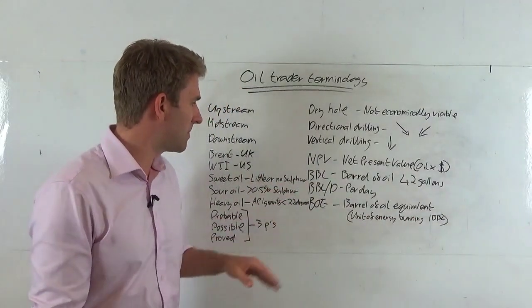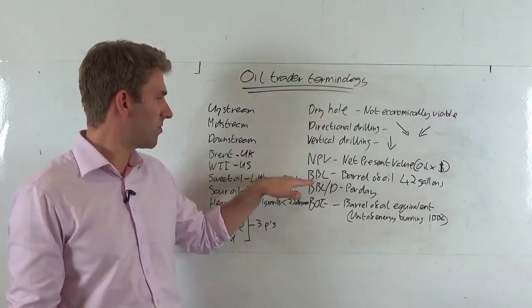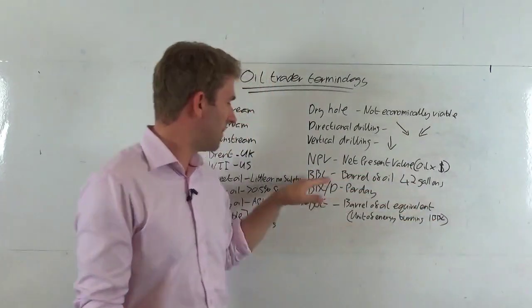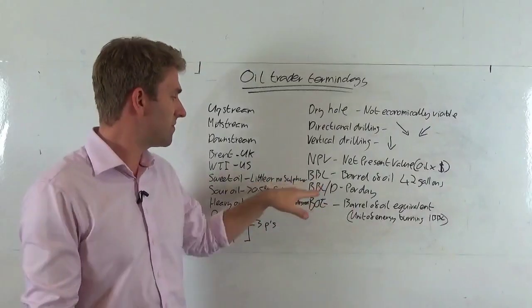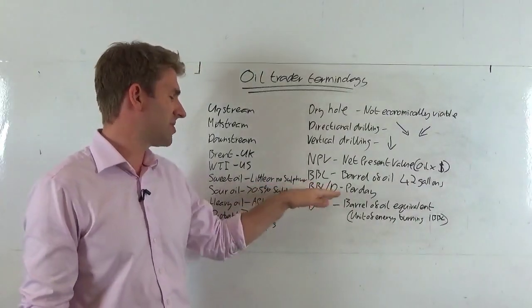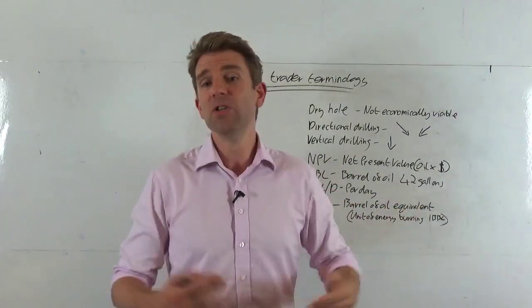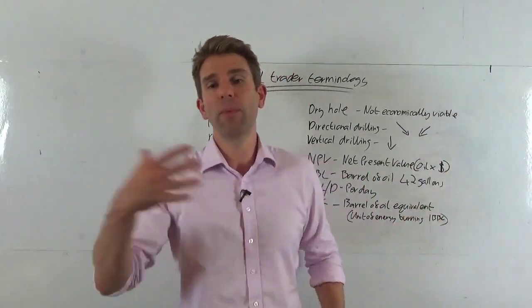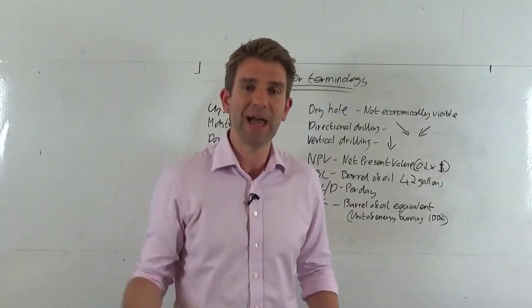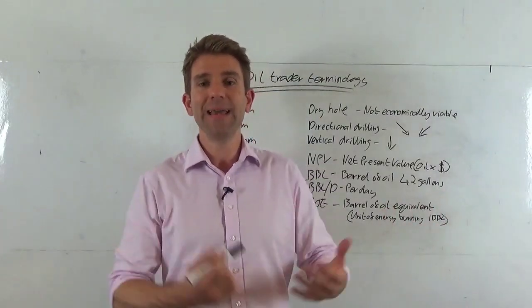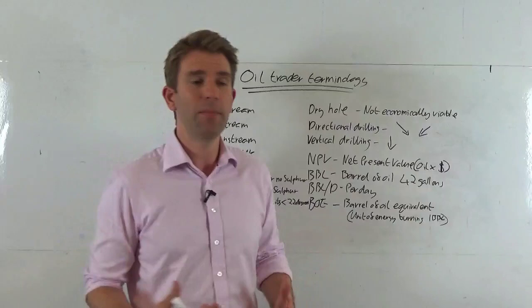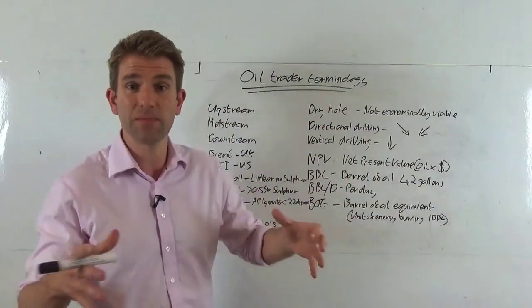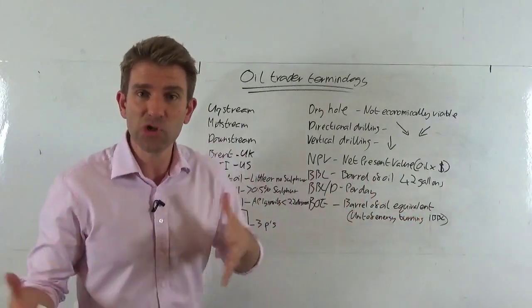So BBL—a barrel of oil. It's 42 gallons in a barrel of oil. BBL is the nomenclature used for that. BBL per day or slash D is barrels of oil per day, talking about how much a well is flowing. Once a well has been explored and they've got the oil pumping out of it, how much is flowing out per day? How much income is that well producing for the company in terms of oil price multiplied by the amount of barrels per day? Pretty simple stuff, but at least you can gauge how much cash flow is coming in.